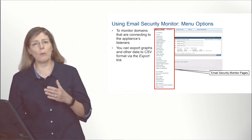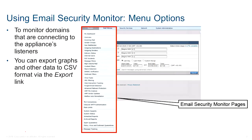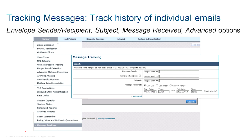From the GUI, the leftmost menu is called the Email Security Monitor. In the Email Security Monitor you will use it to monitor the domains that are connecting to your appliance. You can also view reports, including scheduled reports, and you can have those reports exported in CSV or PDF format.